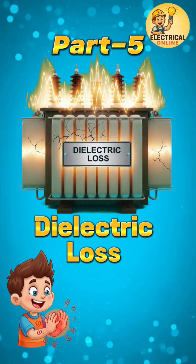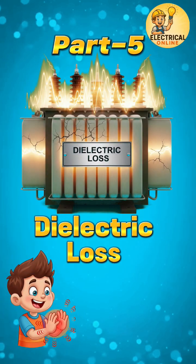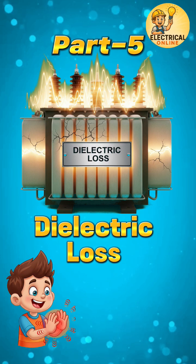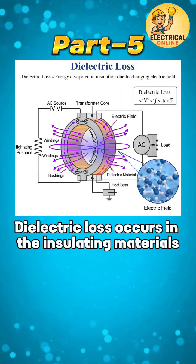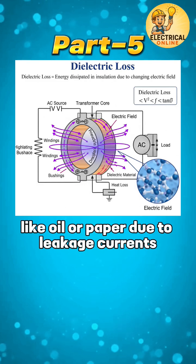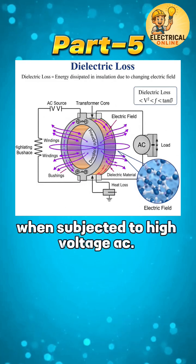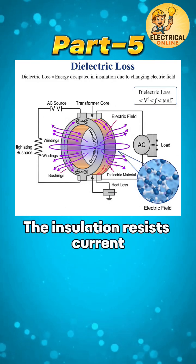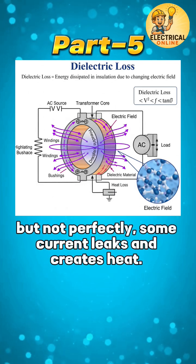Ever heard of a loss inside the insulation? That's dielectric loss — small but dangerous. Dielectric loss occurs in insulating materials, like oil or paper, due to leakage currents when subjected to high voltage AC. The insulation resists current, but not perfectly; some current leaks and creates heat.